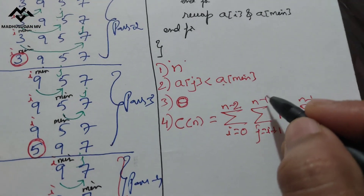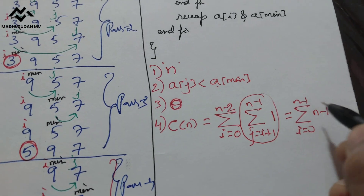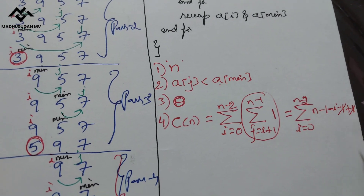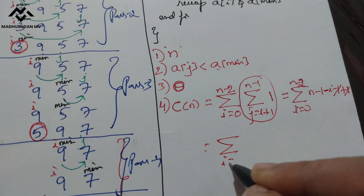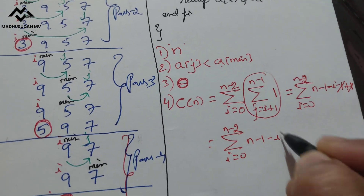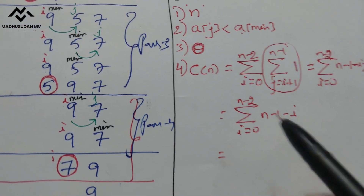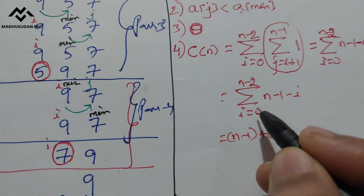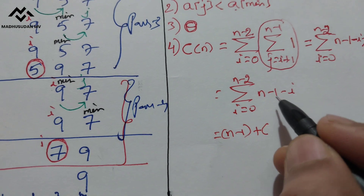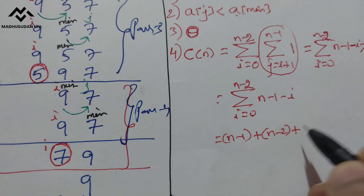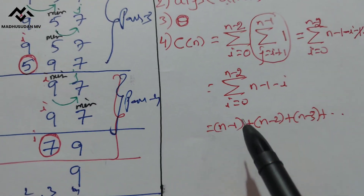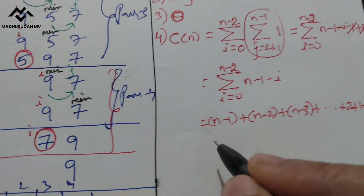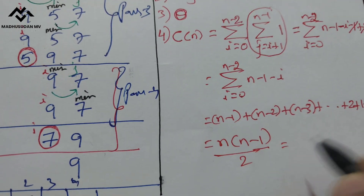Applying the summation formula: the inner sum from j=i+1 to n-1 gives (n-1) minus i terms. So the outer sum becomes: i=0 to n-2 of (n-1-i). Replacing values: when i=0 we get n-1; when i=1 we get n-2; when i=2 we get n-3 — decreasing by one each time until it reaches 0.